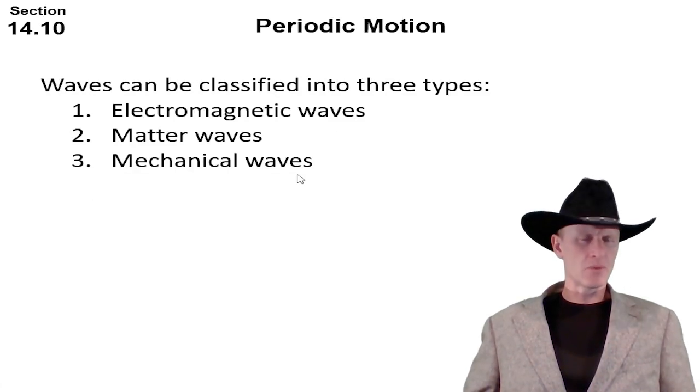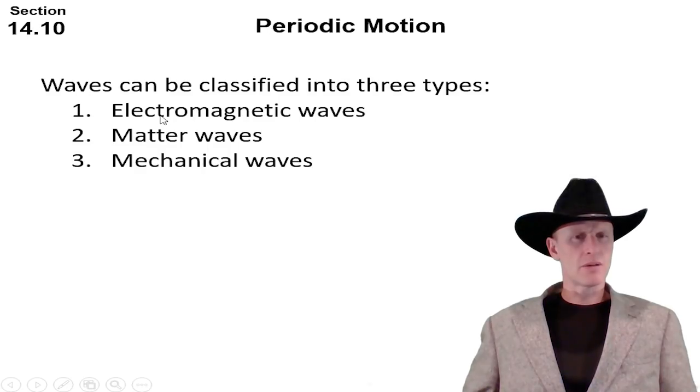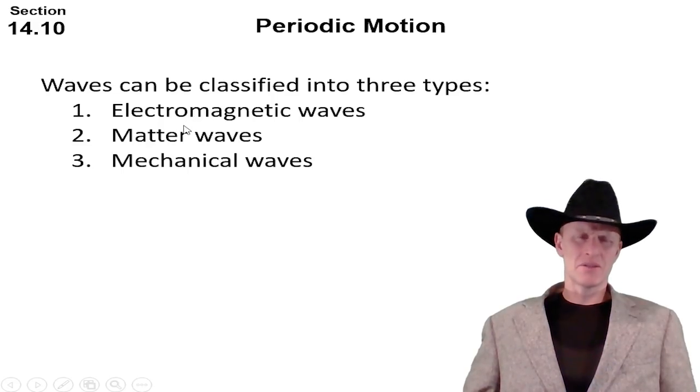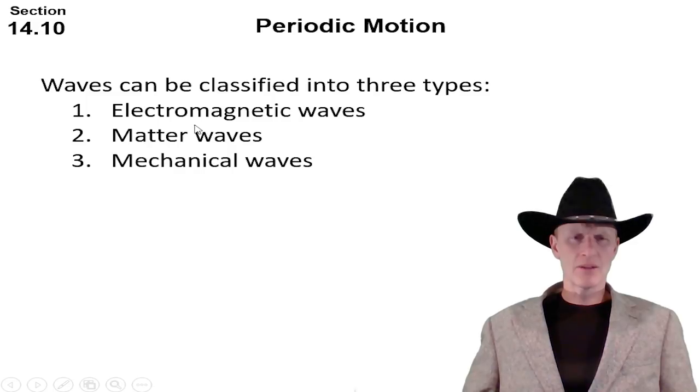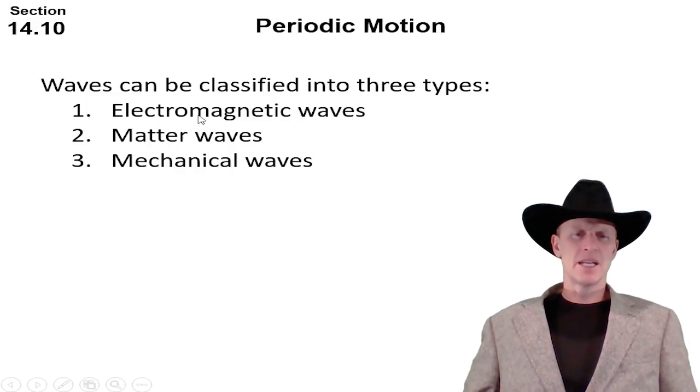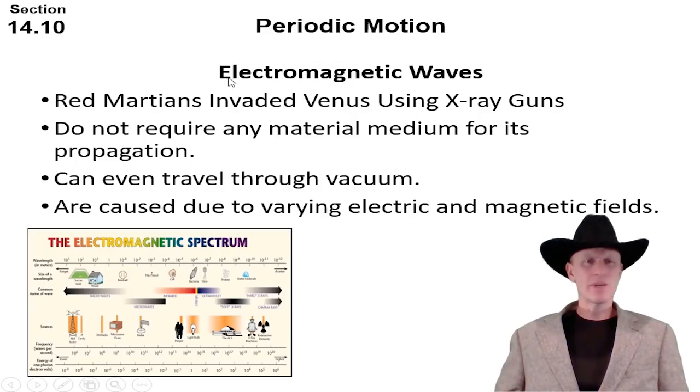We have three different types of waves that we can talk about: electromagnetic waves, matter waves, and mechanical waves. These first two types here we can't really get our hands on to measure anything or collect data on, but mechanical waves we can.